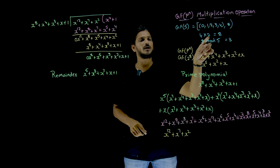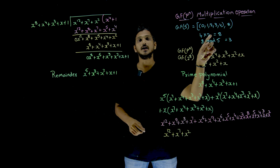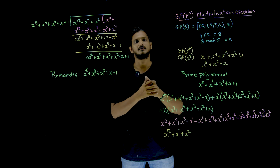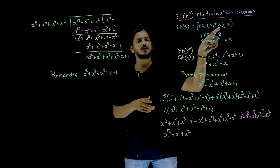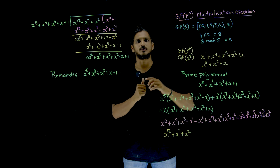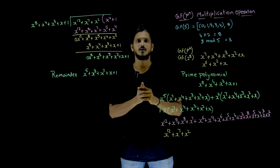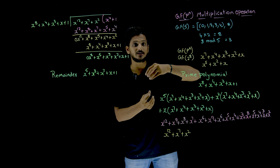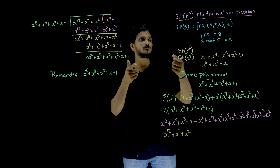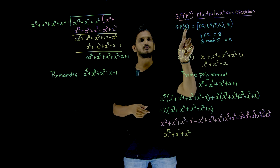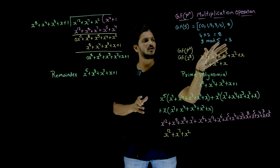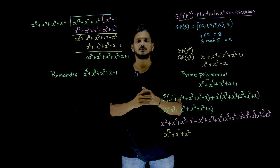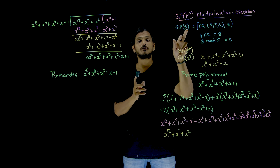Let us take two elements: 4 multiplied by 2. What is the element here? 8. But 8 is not in the set. The set of elements contains only 0, 1, 2, 3, up to 4. In order to bring 8 back to the set, we have done the modulus 5 operation — 8 modulus 5. Because 5 is a prime number, 8 modulus 5 gives you 3. This is what we have done in GF of 5.